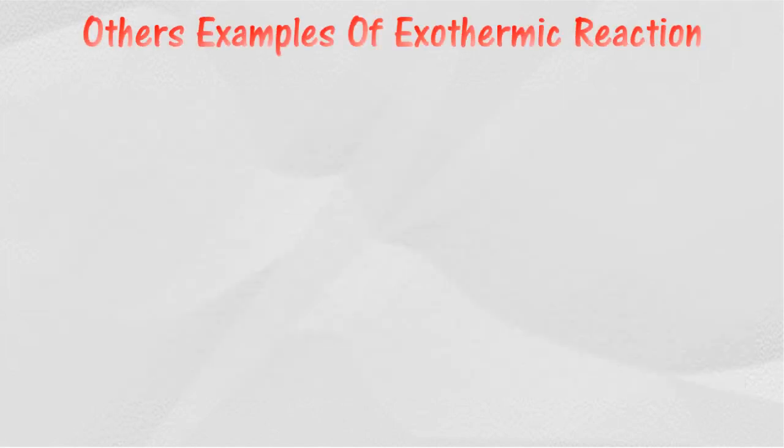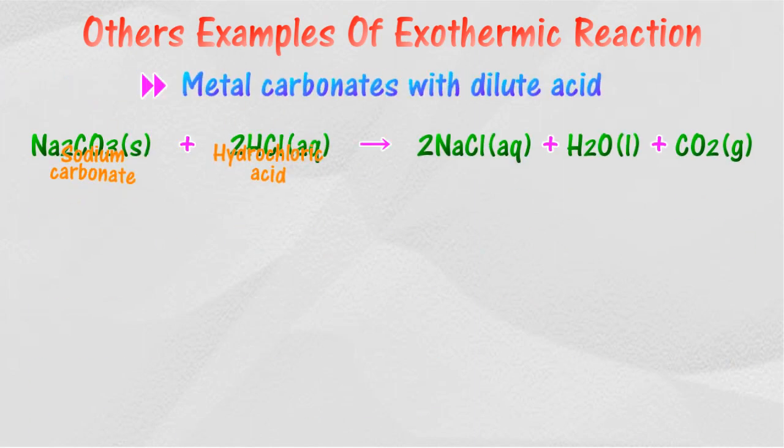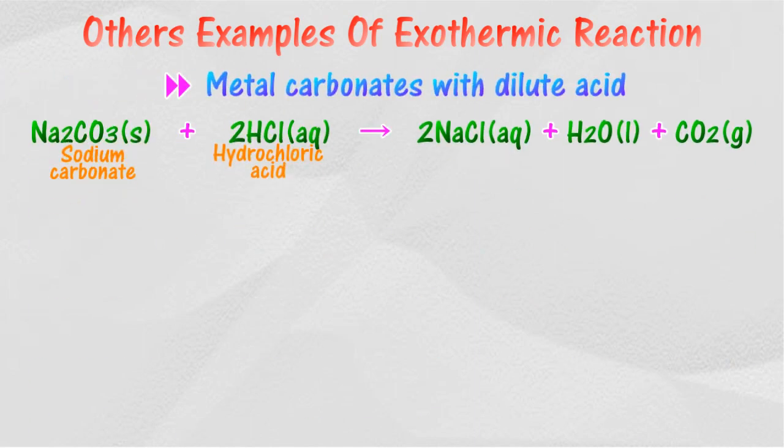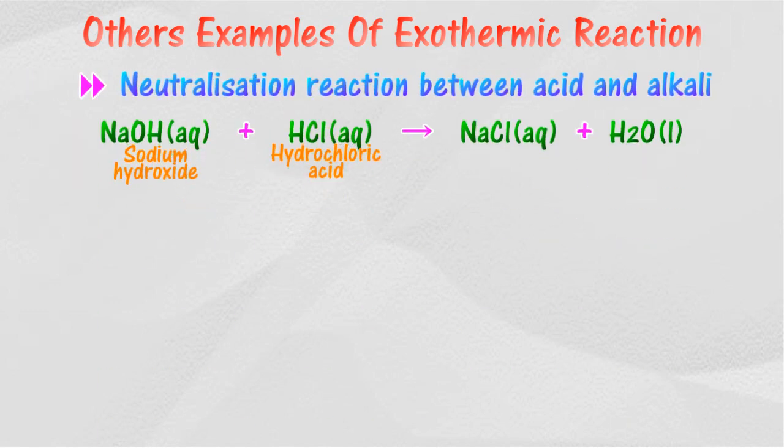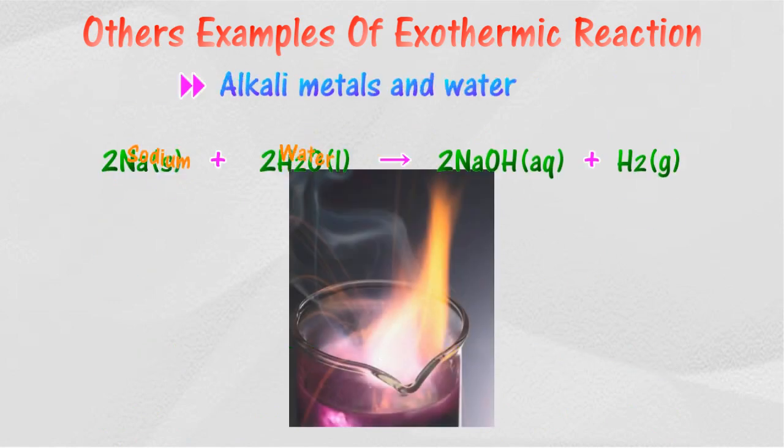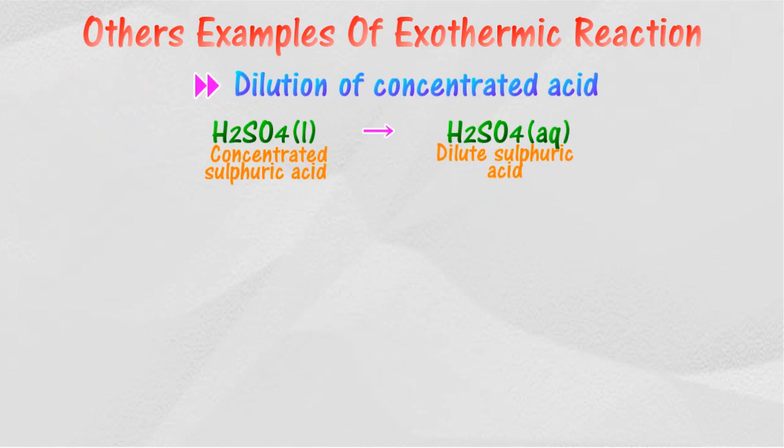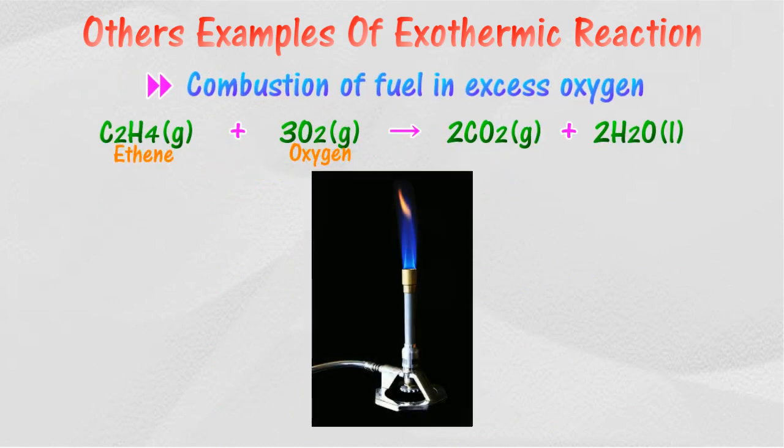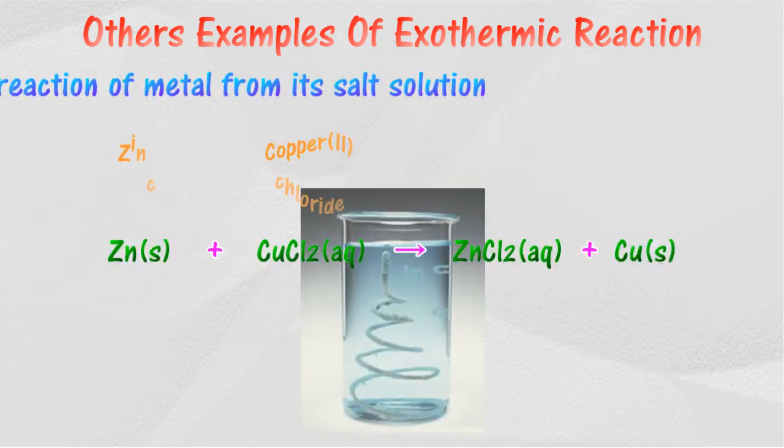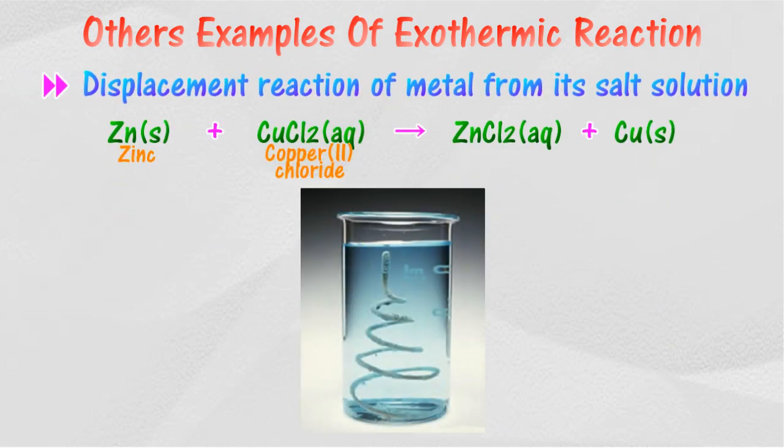Here are a few examples of exothermic reactions: reaction between metal carbonates with dilute acid, neutralization reaction between acid and alkali, reaction between alkali metals and water, dilution of concentrated acid, combustion of fuel in excess oxygen, and displacement reaction of metal from its salt solution. Thank you for taking time to watch this.